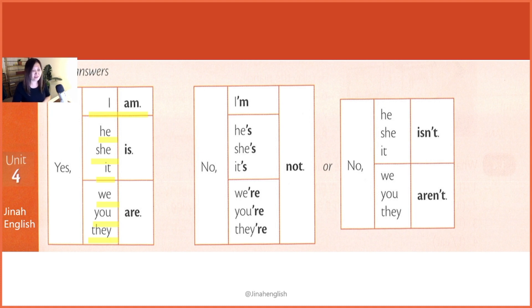For the negative, you can say: No, I'm not. No, he's not. No, she's not. No, it's not. No, we are not. No, you're not. No, they are not.